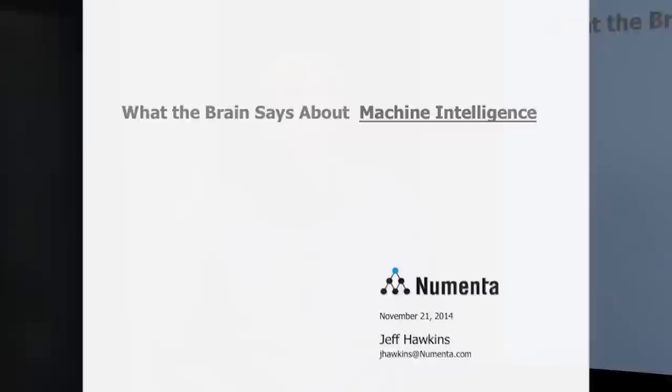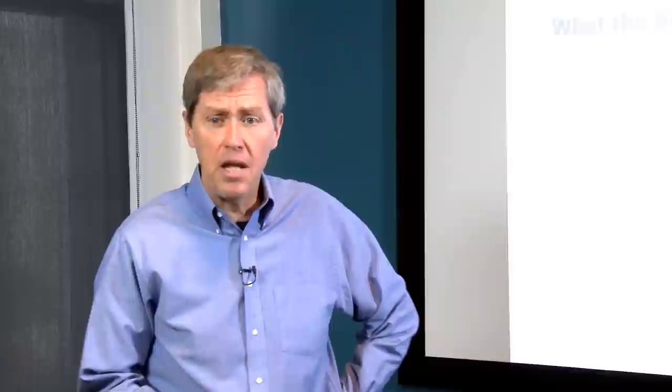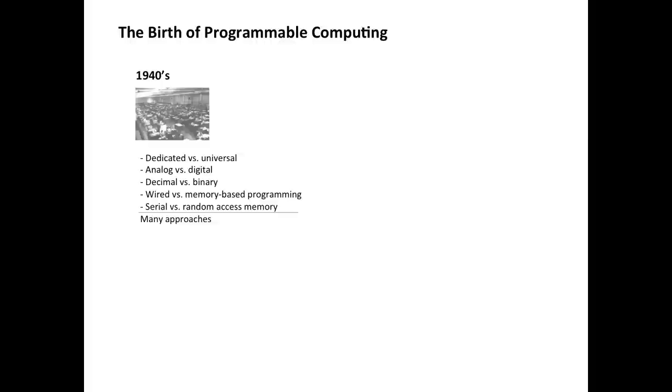Hi, I'm Jeff Hawkins and my talk today is about machine intelligence. The title of the talk is 'What the Brain Says About Machine Intelligence.' At Numenta, that's what we do — we're working on machine intelligence, we study the brain, and this talk is about how the brain informs us how we might go about building intelligent machines.